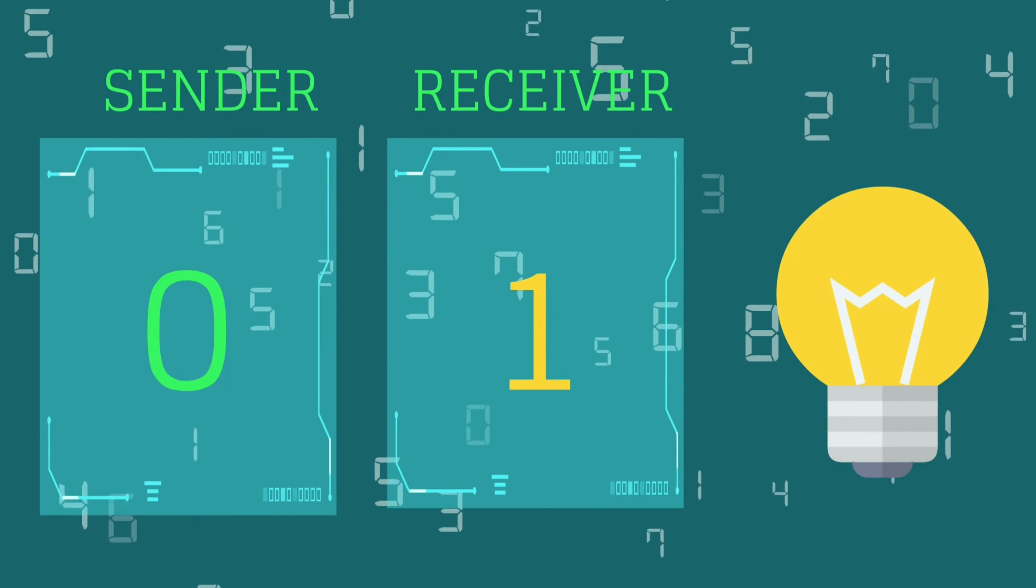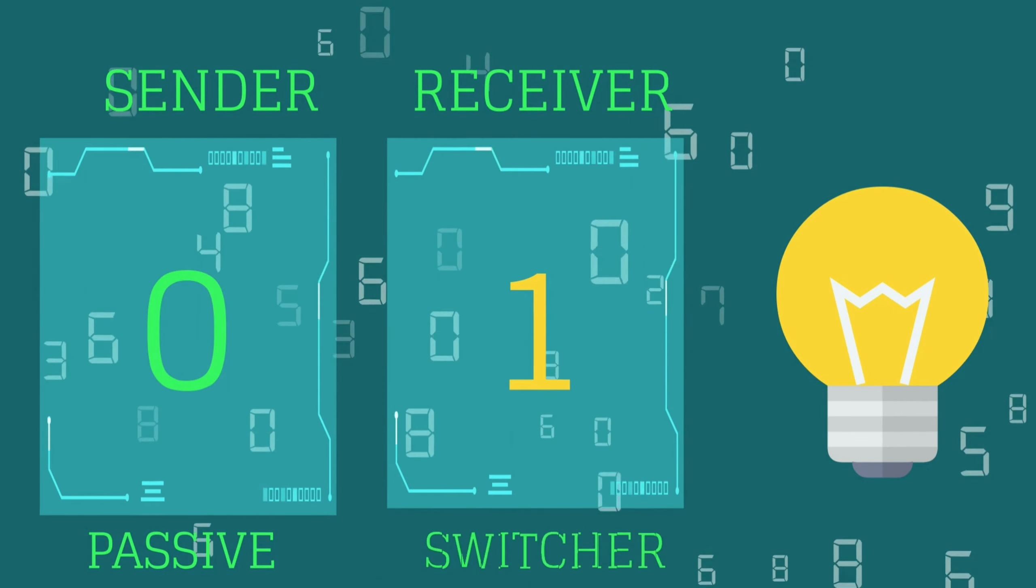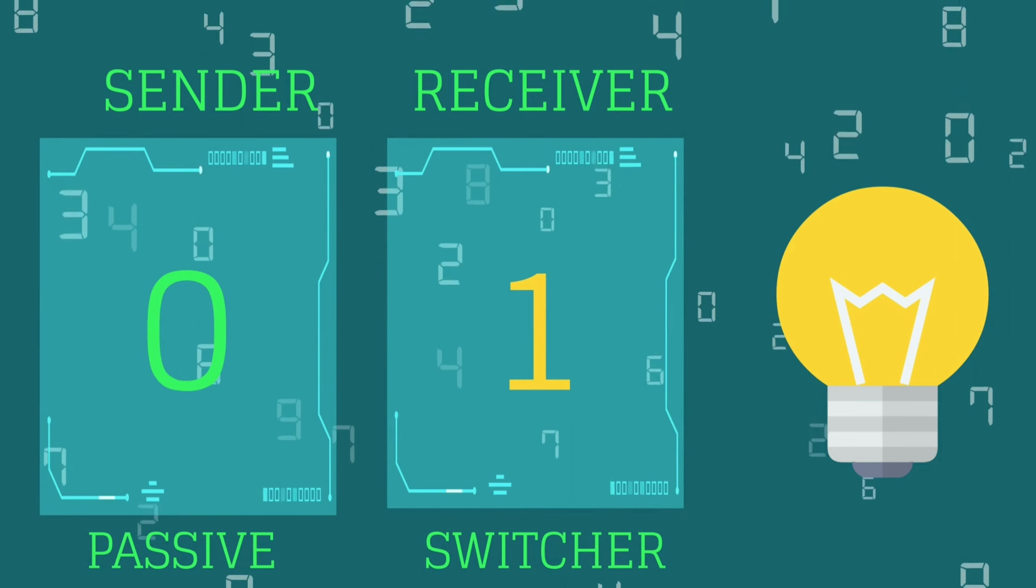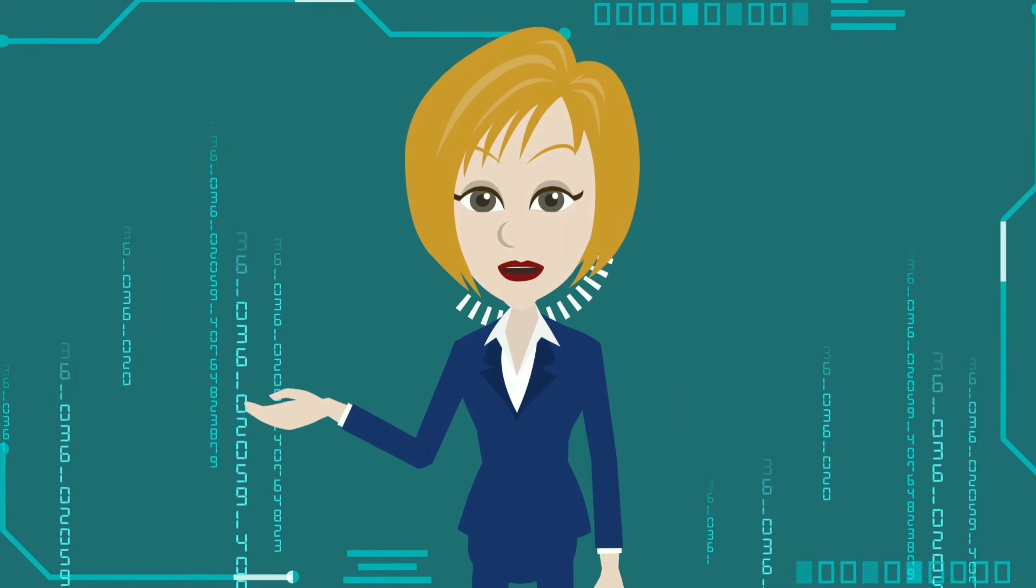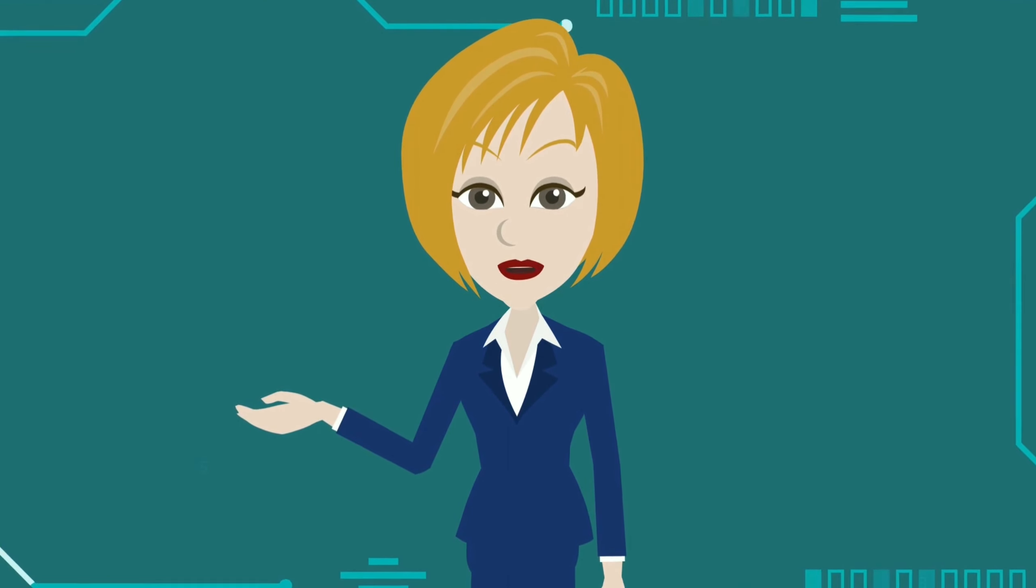The sender A or the receiver B can be the switcher or the passive party in any block. The assignment of who is the switcher for each block is done randomly along with the creation of the matrix.